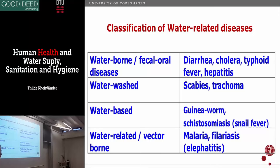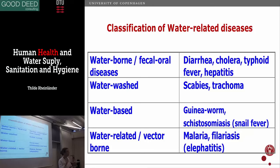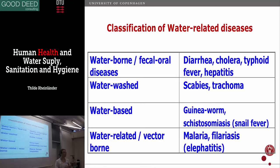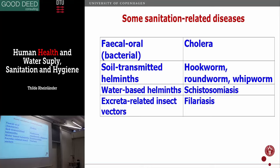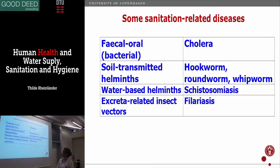Water-washed diseases are controlled and prevented by actually washing. Mechanically, you wash away bacteria or the infection and prevent the disease from manifesting itself. Having bacteria on your hand is not a disease, but you can wash it off. You could also categorize sanitation-related diseases with categories: fecal-oral, soil-transmitted helminths, water-based helminths, and excreta-related insect vectors — some overlapping with water-related categories.